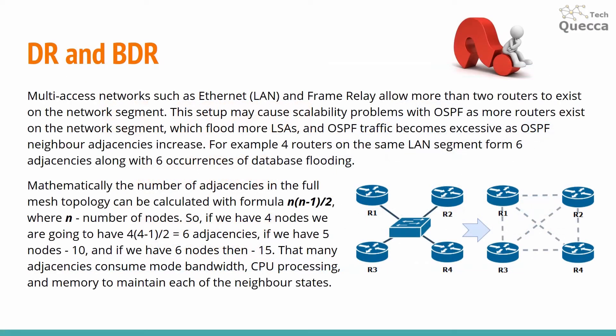Multi-access networks such as Ethernet and Frame Relay allow more than two routers to exist on the network segment. This setup may cause scalability problems with OSPF, as more routers on the segment flood more LSAs and OSPF traffic becomes excessive as OSPF neighbor adjacencies increase.